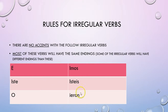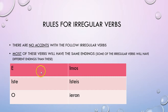Here are those same endings: -e, -iste, -o — notice the lack of accents — -emos, -istes, -ieron. It's the same pattern that you all are used to from regular preterite.